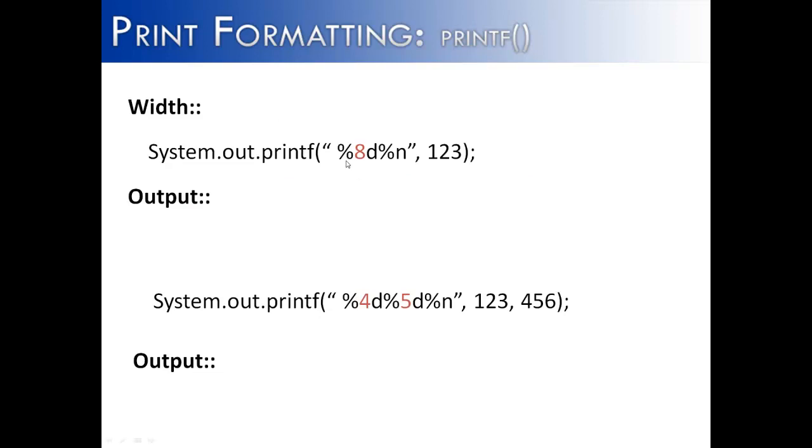Width is specified between the percent sign and the conversion character. In this case, we have specified 8 spaces. So I have indicated these spaces by blank lines. And the way that this would print out, because 1, 2, 3 has 3 characters in it, it is going to take up 3 of the 8 spaces created by %d. The rest are just going to be left as blank spaces. So it would be 5 blank spaces and then 1, 2, 3.